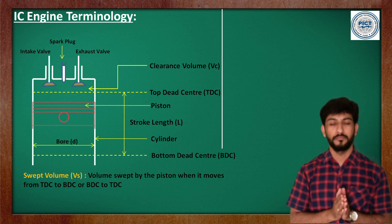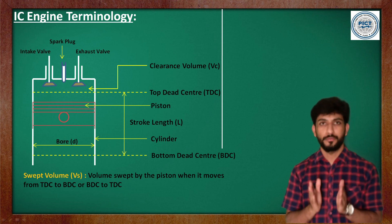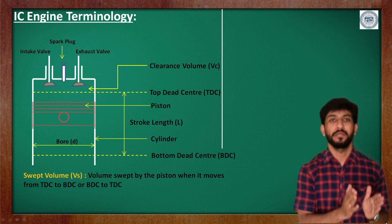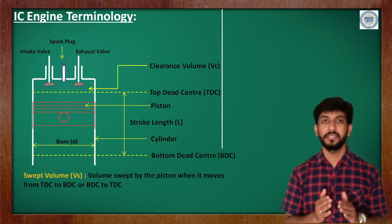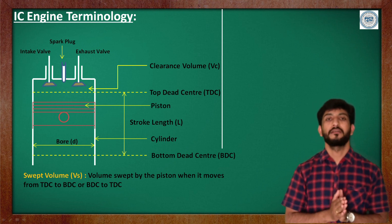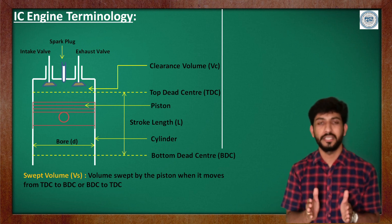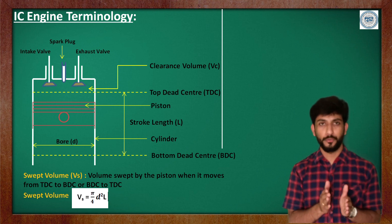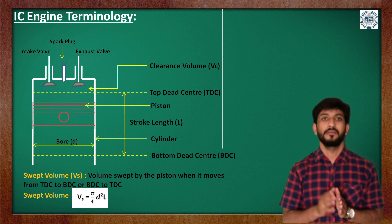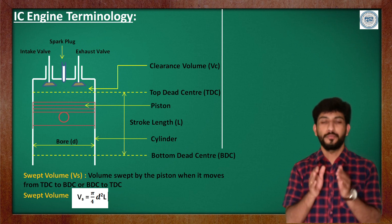The next term is swept volume. Swept volume is the volume swept by the piston when it travels from BDC to TDC or TDC to BDC. This can be calculated as the cross-sectional area of the cylinder multiplied by the height — that is, (π/4) × D² × L, where D is the piston or bore diameter and L is the stroke length.